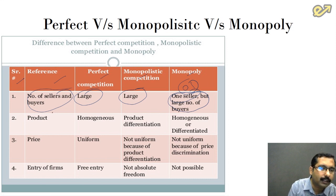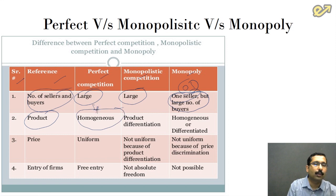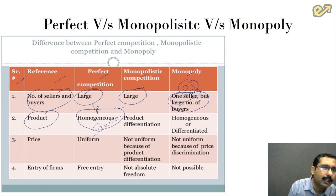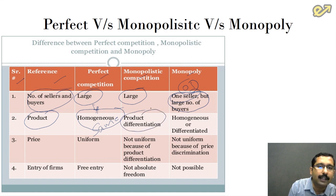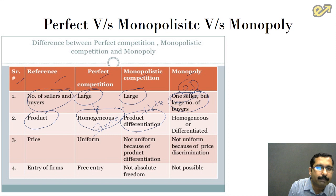The second difference is about the product. In a perfect competition market, although there are a large number of producers, all of them produce homogenous products. Homogenous means the same — there is absolutely no difference between goods and services produced by different players. But in monopolistic competition, products are differentiated, also called heterogeneous. The goods produced by one seller are different from those produced by another seller.